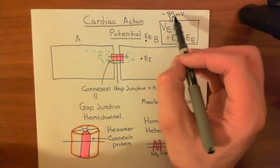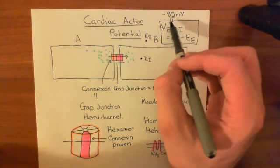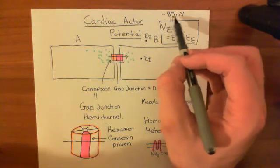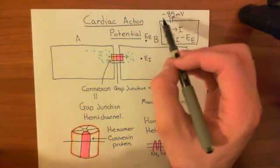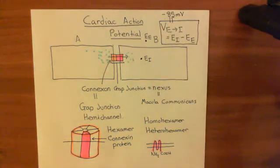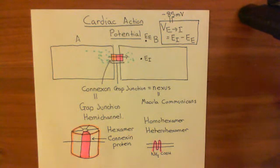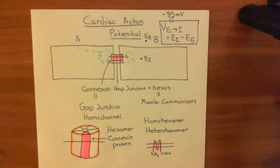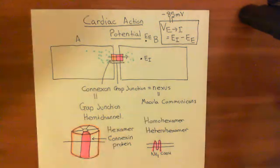You're going to depolarize the membrane — you're going to go up towards zero. This is because of these sodium ions moving in from cardiomyocyte A, which is undergoing an action potential, moving in through these gap junctions — these electrical windows between the two cardiomyocytes. We'll discuss the consequences of this in the next video.